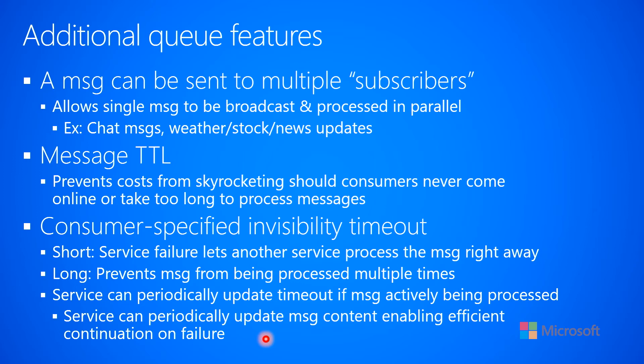So some queues have a feature where you can start processing the message, and when you're, say, 10 minutes in, you can update the message in the queue but still keep it invisible. Then if you crash, when some other service instance pulls that message, it can look at it and say, 'the first 10 minutes were done successfully, so I can pick up from where the other one left off.' These are really optimizations on queue processing that allow you to fine-tune behavior and give you more control over running your service in a more efficient, cost-effective way.